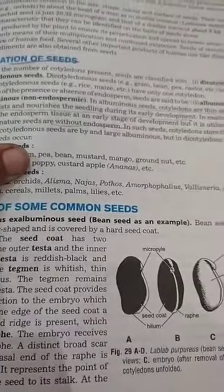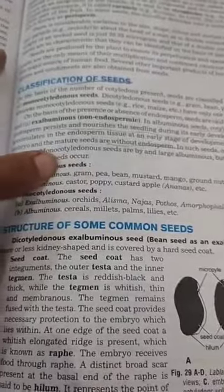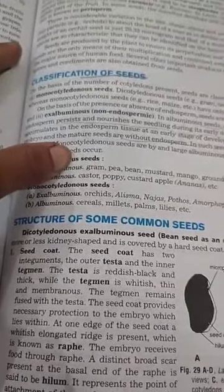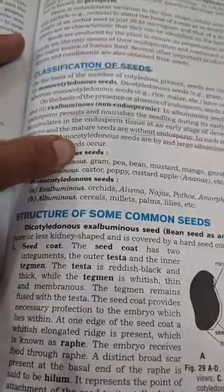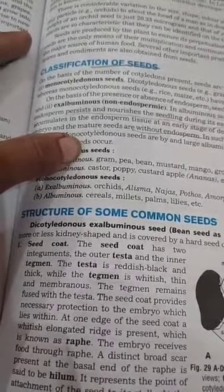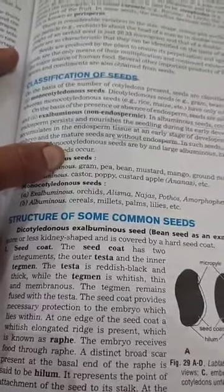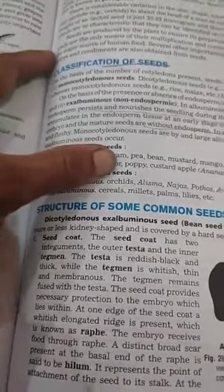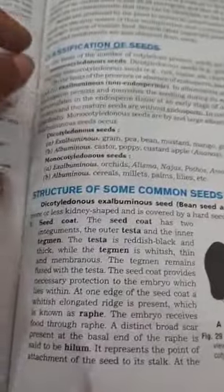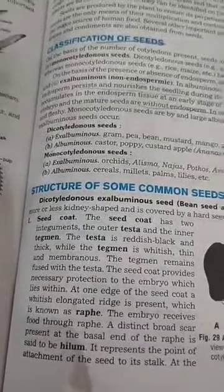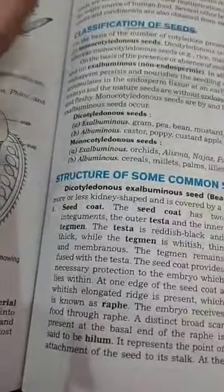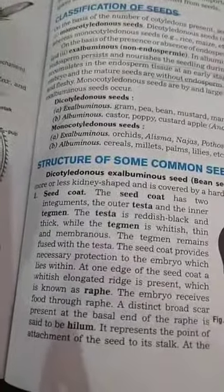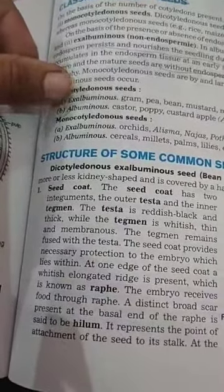In albuminous seeds, the endosperm persists in the mature seed and provides nourishment to the developing embryo. Non-albuminous seeds do not retain endosperm. Examples of non-albuminous seeds include gram, pea, and bean; albuminous examples include castor and poppy. These seed types are important to remember.